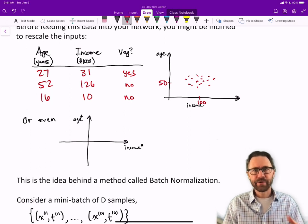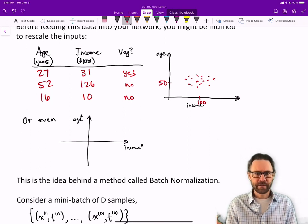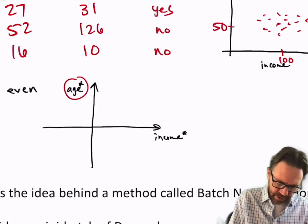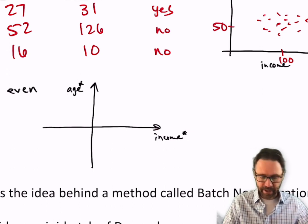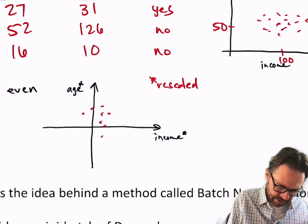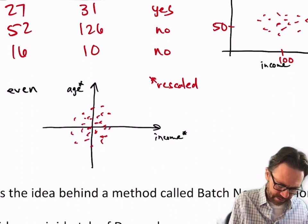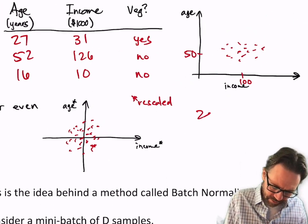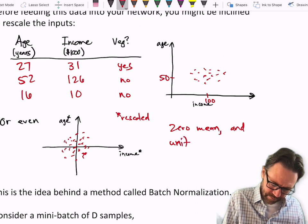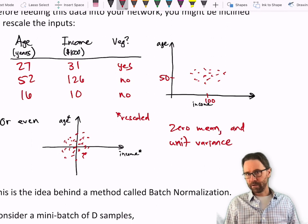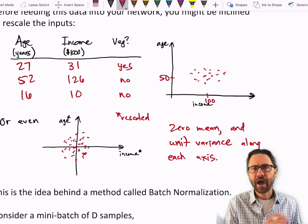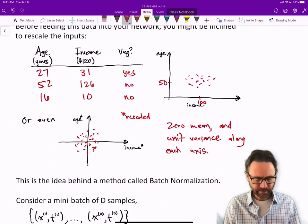Why don't we just come up with an arbitrary scale and rescale our input features so that they are centered on zero and with some predetermined variance? I've got age* and income* meaning they've been rescaled. If I choose it properly, my data will look like this. In particular, I'm going for zero mean and unit variance.